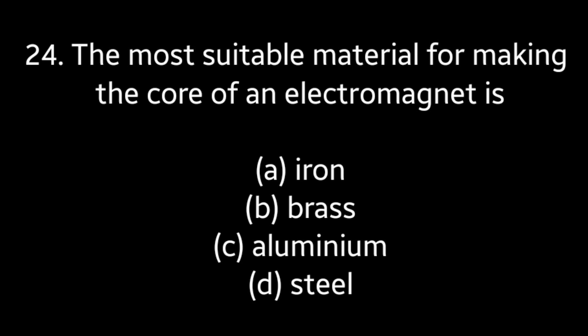Question No. 24: The most suitable material for making the core of an electromagnet is — Iron, Brass, Aluminium, Steel. Answer is Option A: Iron.